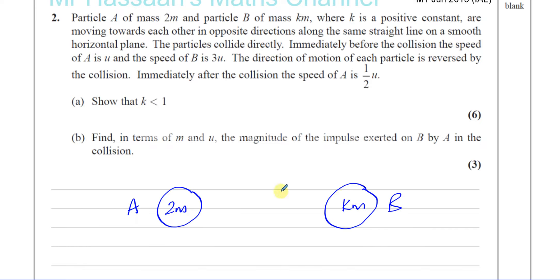They're moving towards each other in opposite directions. Immediately before the collision, the speed of A is U. The speed of B is 3U.